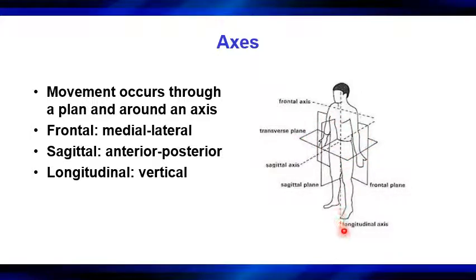Rotational movements occur through the transverse plane and rotate around the longitudinal axis. If this person were to rotate their trunk, they'd be moving through the transverse plane and rotating around the vertical axis. If you know the plane, you know the axis and vice versa. If you move in the frontal plane, you're moving around the sagittal or anterior-posterior axis. If you're moving through the sagittal plane, you're moving around the frontal or medial-lateral axis. Moving through the transverse plane means rotating around the longitudinal or vertical axis.